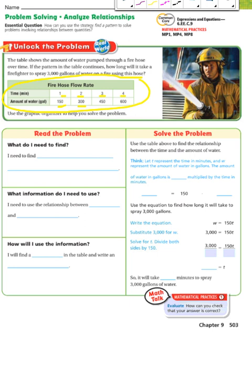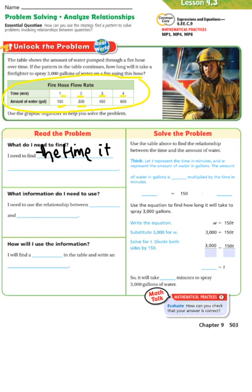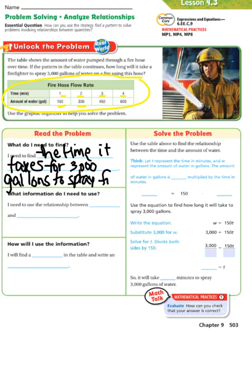Read the problem. What do I need to find? I need to find the time it takes for 3,000 gallons to spray from a hose. What information do I need to use? I need to use the relationship between time and the amount of water in gallons. How will I use the information? I will find a pattern in the table and write an equation.